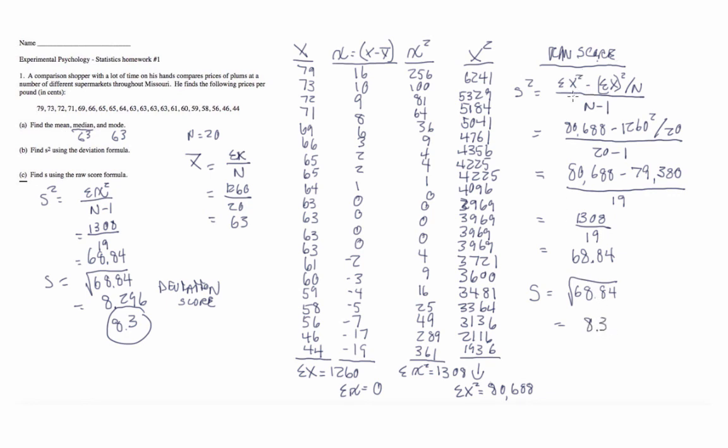So, what you can see is that you get the same answer whether you use the deviation score formula or the raw score formula. It's not mathemagic. It's because the two formulas are algebraically equivalent to each other. But you can do the same problem either way. And so, that is how you do mean, median, mode, variance, and standard deviation using the deviation and raw score formulas.